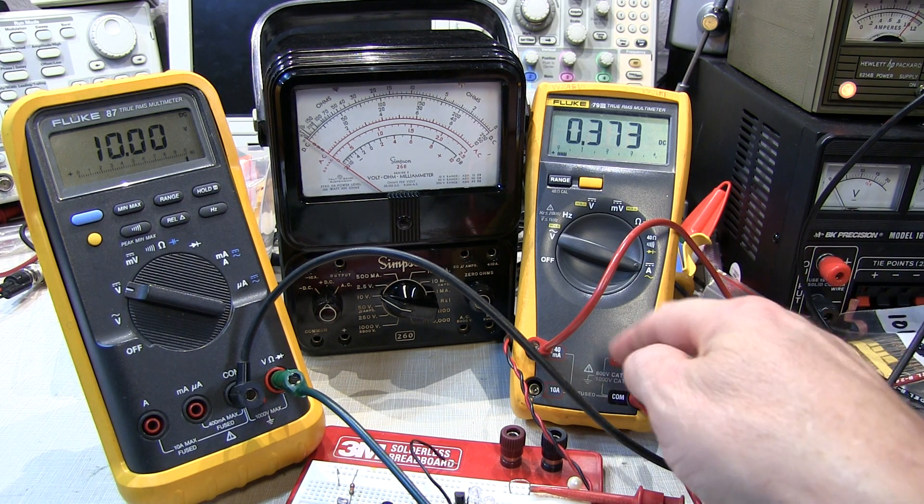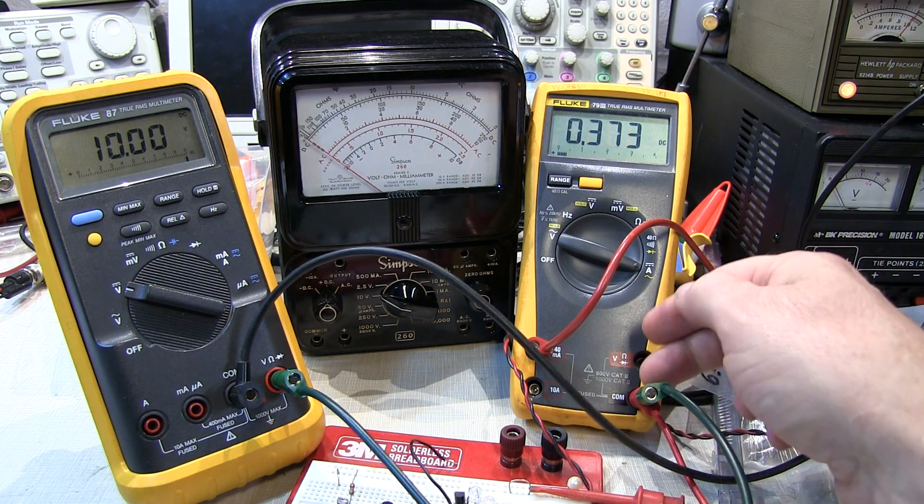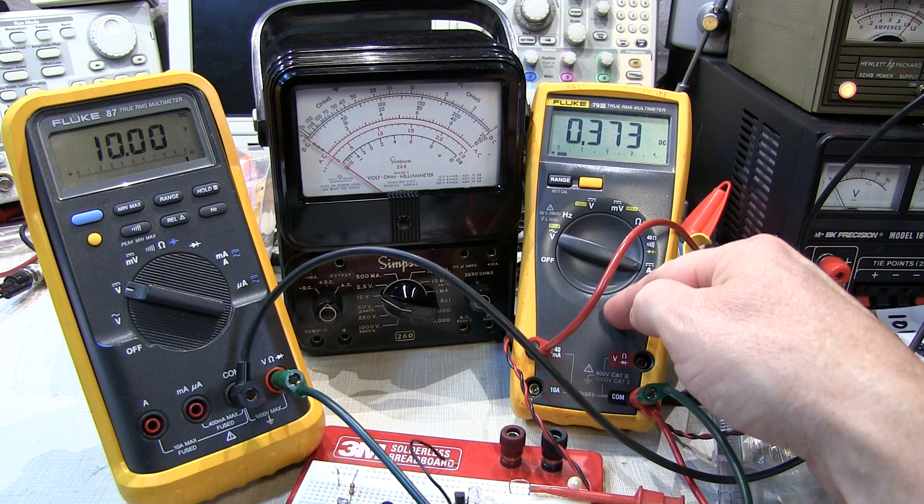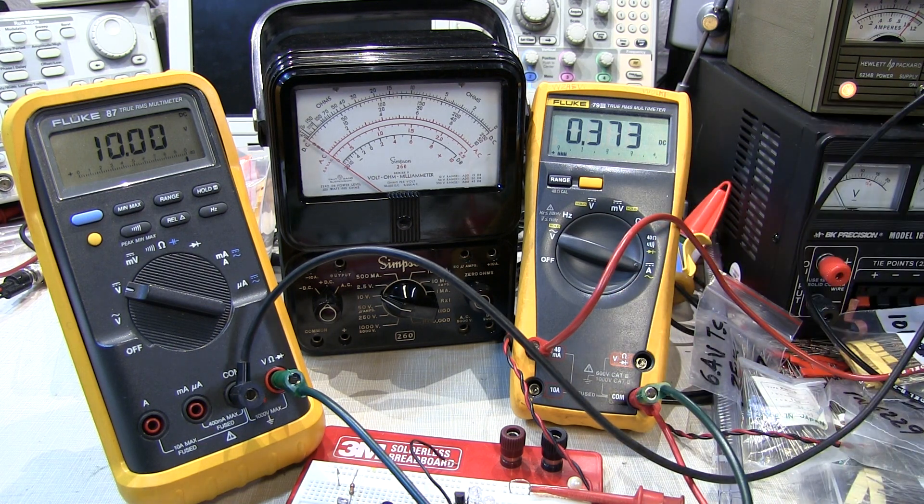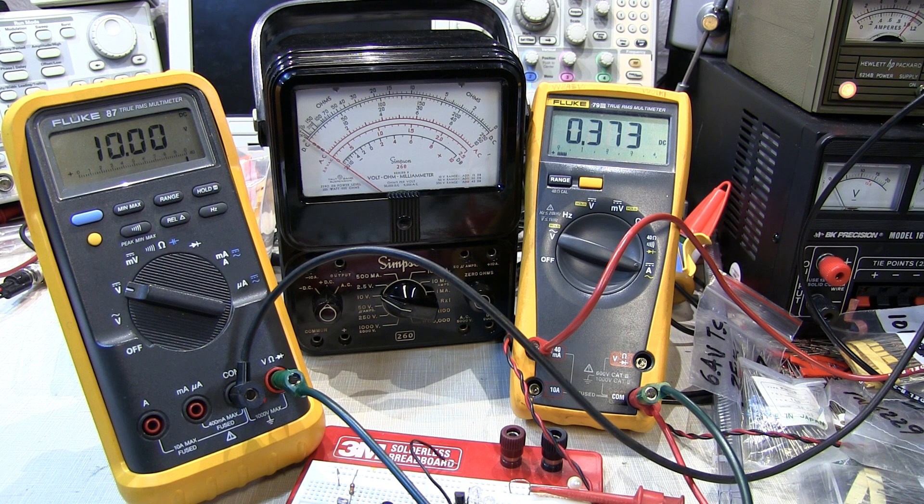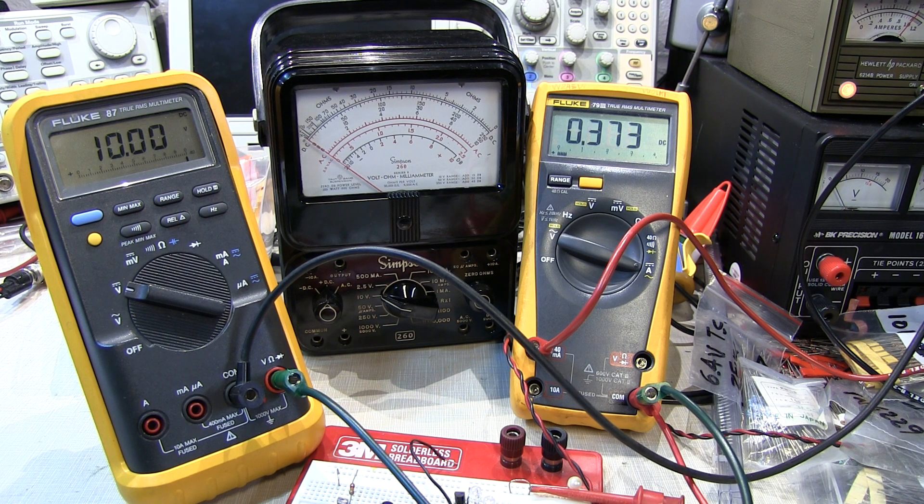Similarly, when you're using an ammeter, you've got to consider the burden voltage, how much voltage is dropped in the meter to measure that current. It's not a short circuit. There is a shunt resistor there that typically has got a voltage drop across it. You have to take that into consideration. Even if you're probing with an oscilloscope, what kind of loading is the probe placing on your circuit and how will the circuit react to that load?